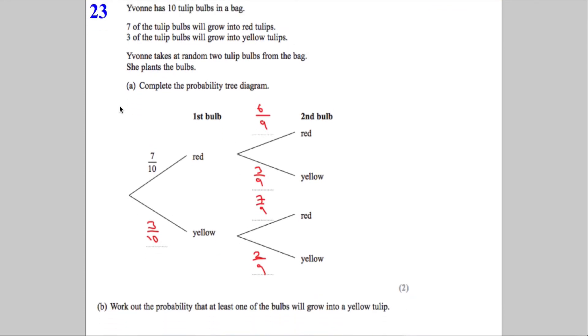The second part of the question is to work out the probability that at least one of the bulbs will grow into a yellow tulip. Word of advice, let's work out all the outcomes straight away. We generally tend to multiply across the branches. We're going to do 7 out of 10 times 6 out of 9, 7 out of 10 times 3 out of 9, 3 out of 10 times 7 out of 9, and 3 out of 10 times 2 out of 9.